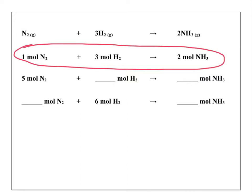What if we didn't have one mole of nitrogen? What if we had five moles of nitrogen instead? We can use stoichiometry to predict how many moles of hydrogen would be reacted and how many moles of ammonia would be produced. We'll look at the five moles of nitrogen and use our coefficients to look at the ratio between reactants and products. So instead of one mole, we have five moles — one times five gives us five moles.